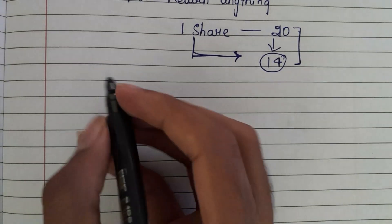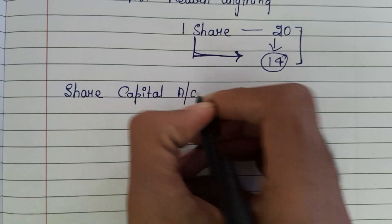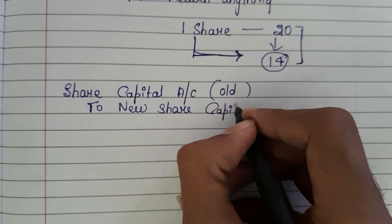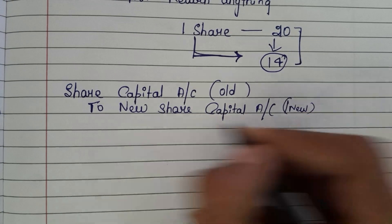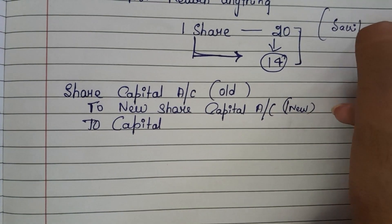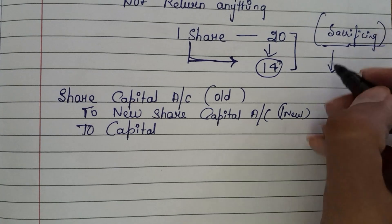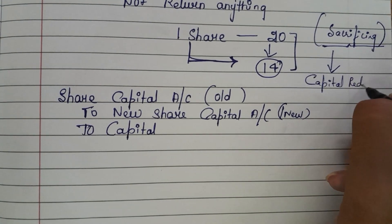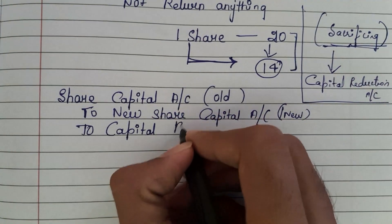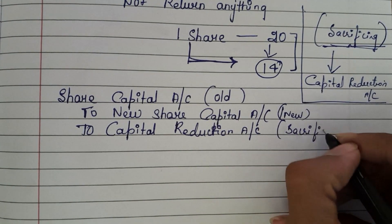What will be the journal entry? The journal entry will be: Share Capital Account (old value) debited to New Share Capital Account (new value) and to Capital Reduction Account. This is the case when shareholders are sacrificing — whatever amount they are sacrificing should be transferred to the Capital Reduction Account.